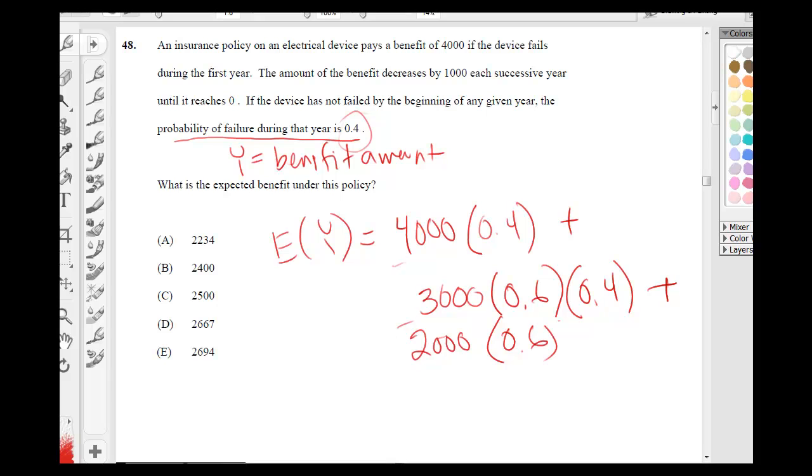So, 0.6 squared times 0.4, the probability that it failed during this year.